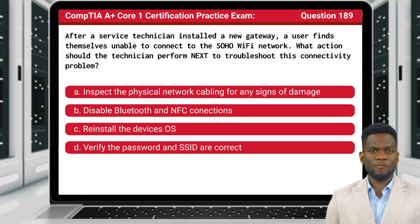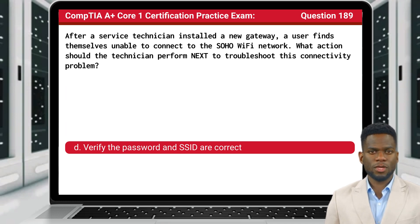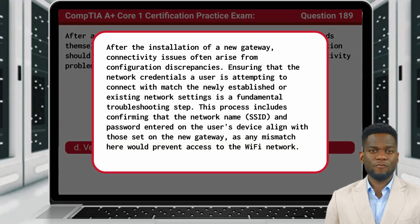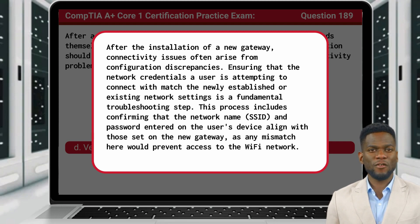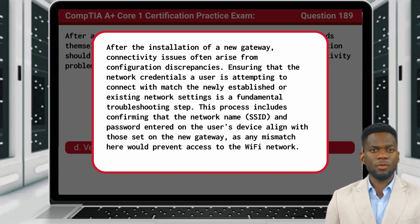Question 189. After a service technician installed a new gateway, a user finds themselves unable to connect to the Sova Wi-Fi network. What action should the technician perform next to troubleshoot this connectivity problem? The answer is D: verify the password and SSID are correct. After the installation of a new gateway, connectivity issues often arise from configuration discrepancies. Ensuring that the network credentials a user is attempting to connect with match the newly established or existing network settings is a fundamental troubleshooting step. This includes confirming that the SSID and password entered on the user's device align with those set on the new gateway, as any mismatch would prevent access to the Wi-Fi network.